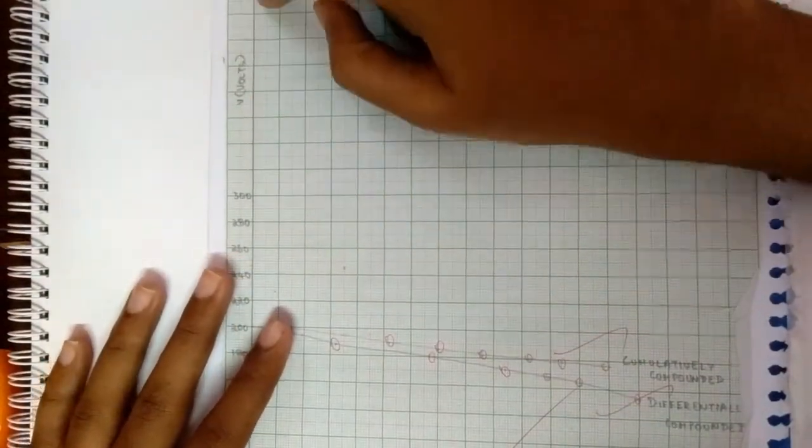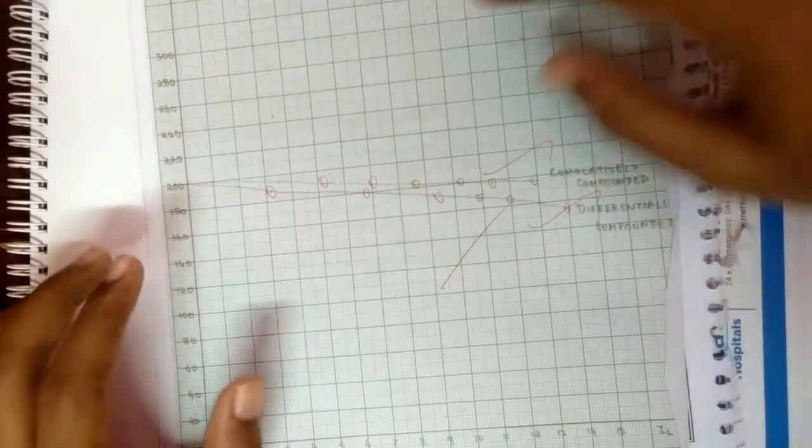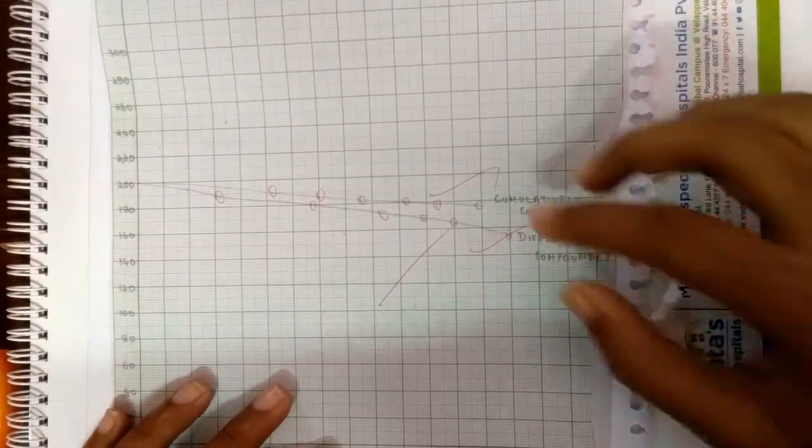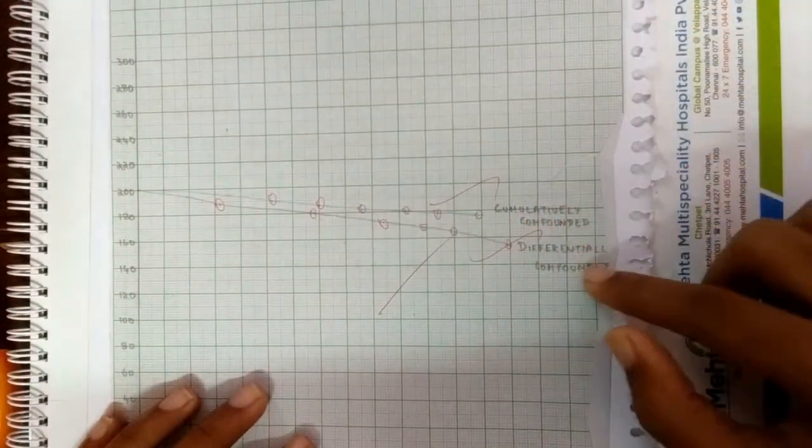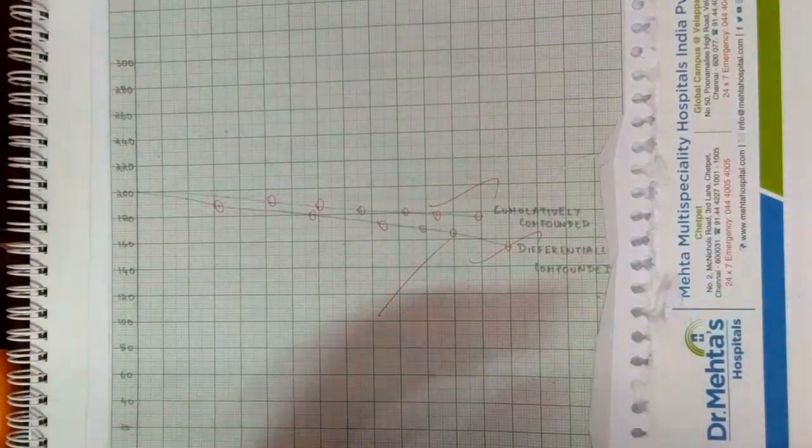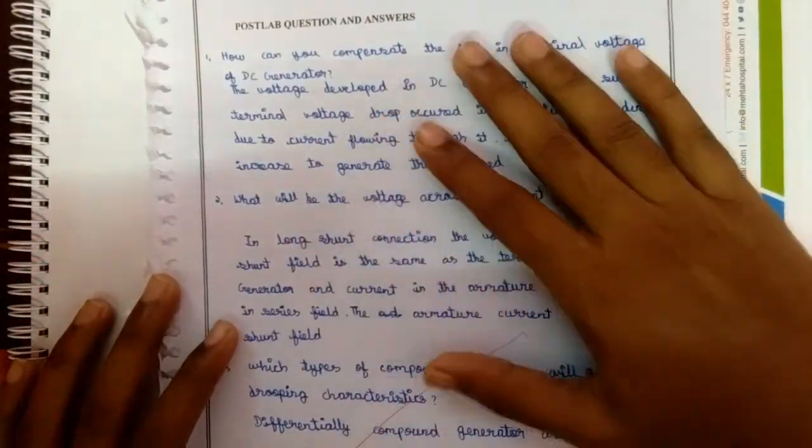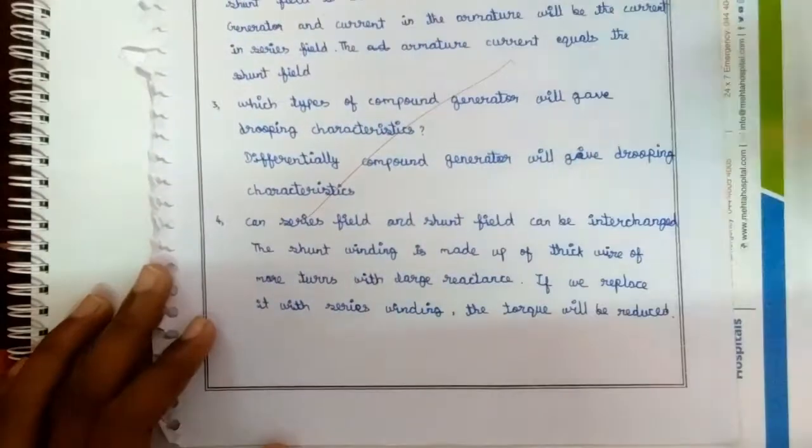So the graph will look like this: cumulatively compound and differentially compound. With this graph, the experiment is over. You can just take a screenshot or review the questions for a viva.